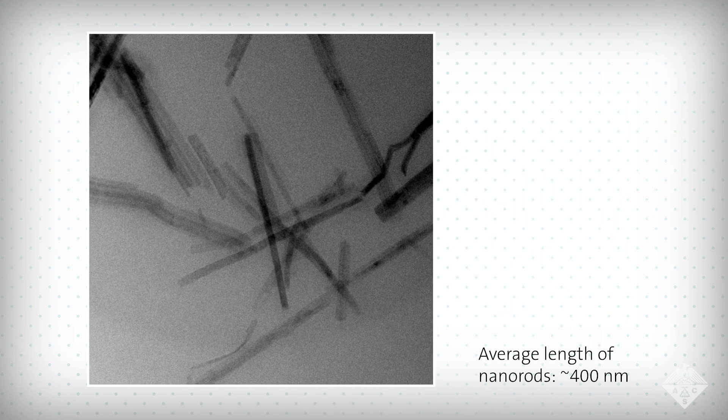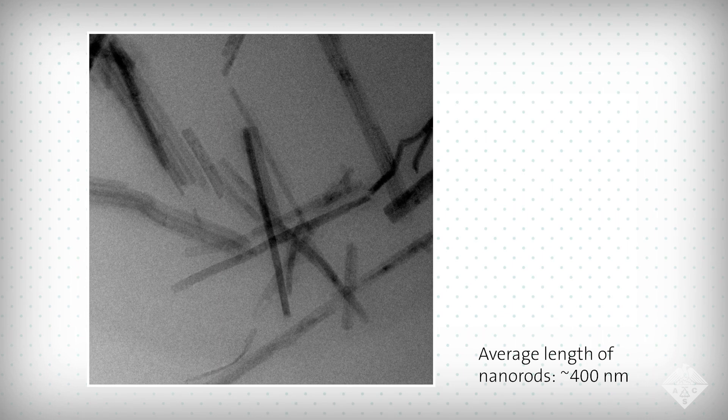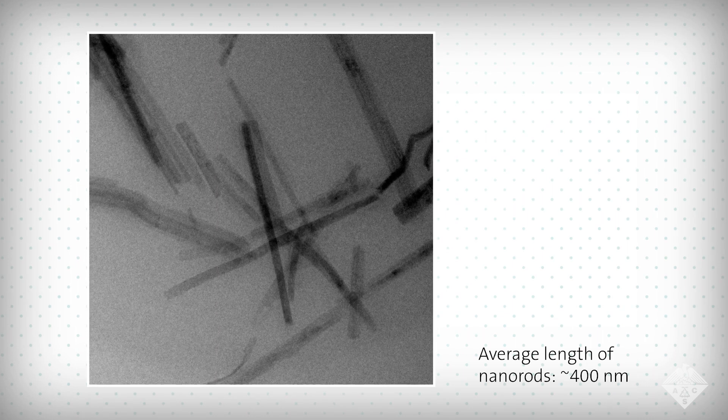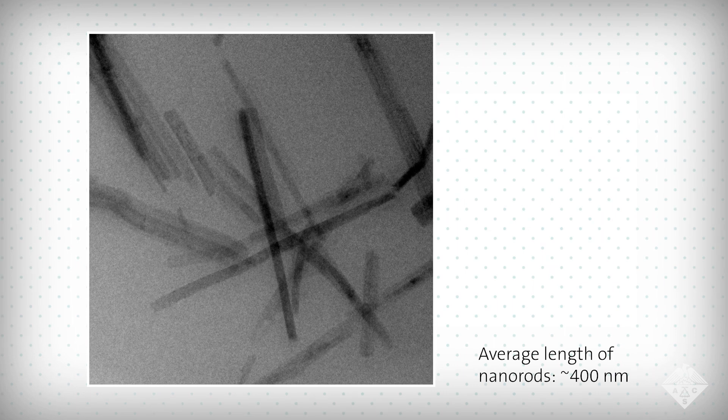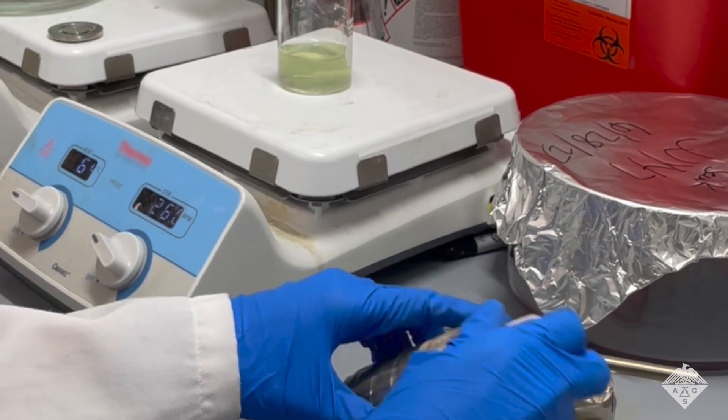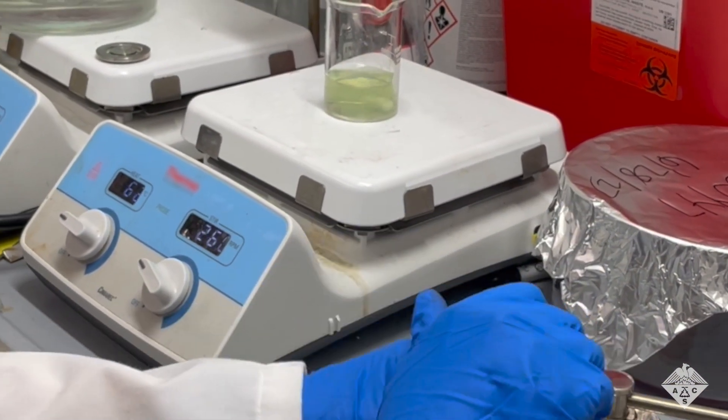So the researchers designed nano-sized rods that prompt this same chemical reaction inside the ear, fueled by hydrogen peroxide from the bacteria. The rods contain the metal vanadium, just like the kelp enzyme does.